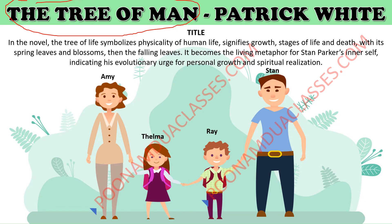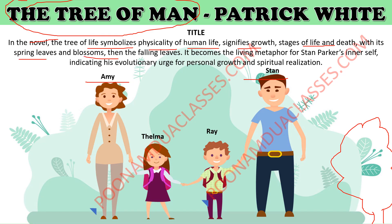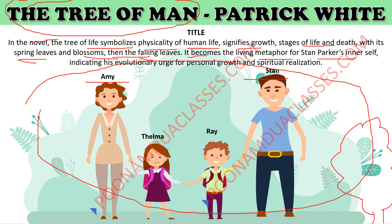The title of the novel is The Tree of Man. The whole land where Stan and Amy were introduced has been presented as a tree. When someone brings a small tree, it is like a child — slowly it will grow. You cannot expect everything to remain as small, innocent, and beautiful as it started. In the novel, the tree of life symbolizes the physicality of human life — it signifies growth, the stages of life, and death. With its spring leaves and blossoms, then the falling leaves, it becomes a living metaphor for Stan Parker's inner self, indicating his evolutionary urge for personal growth and spiritual realization.